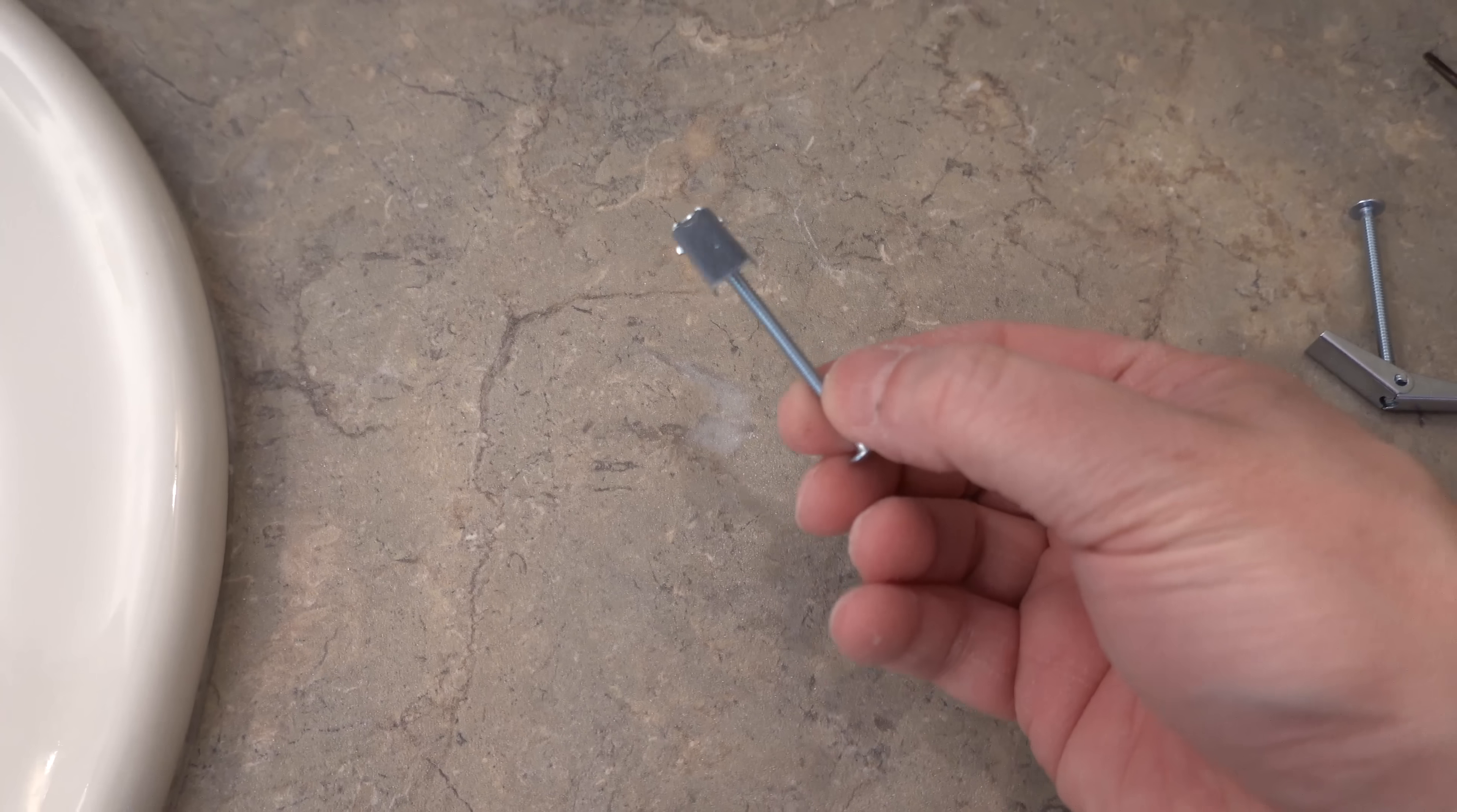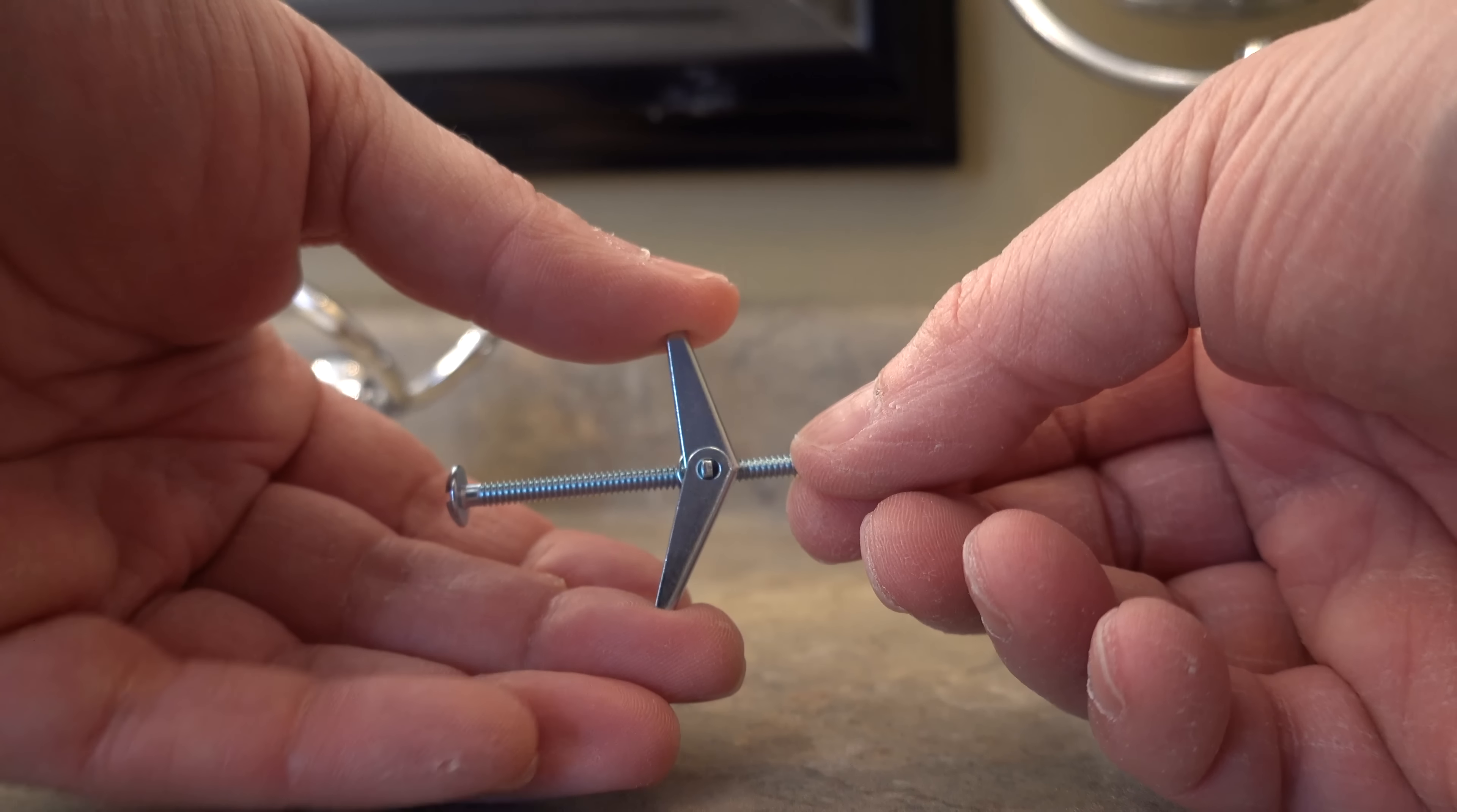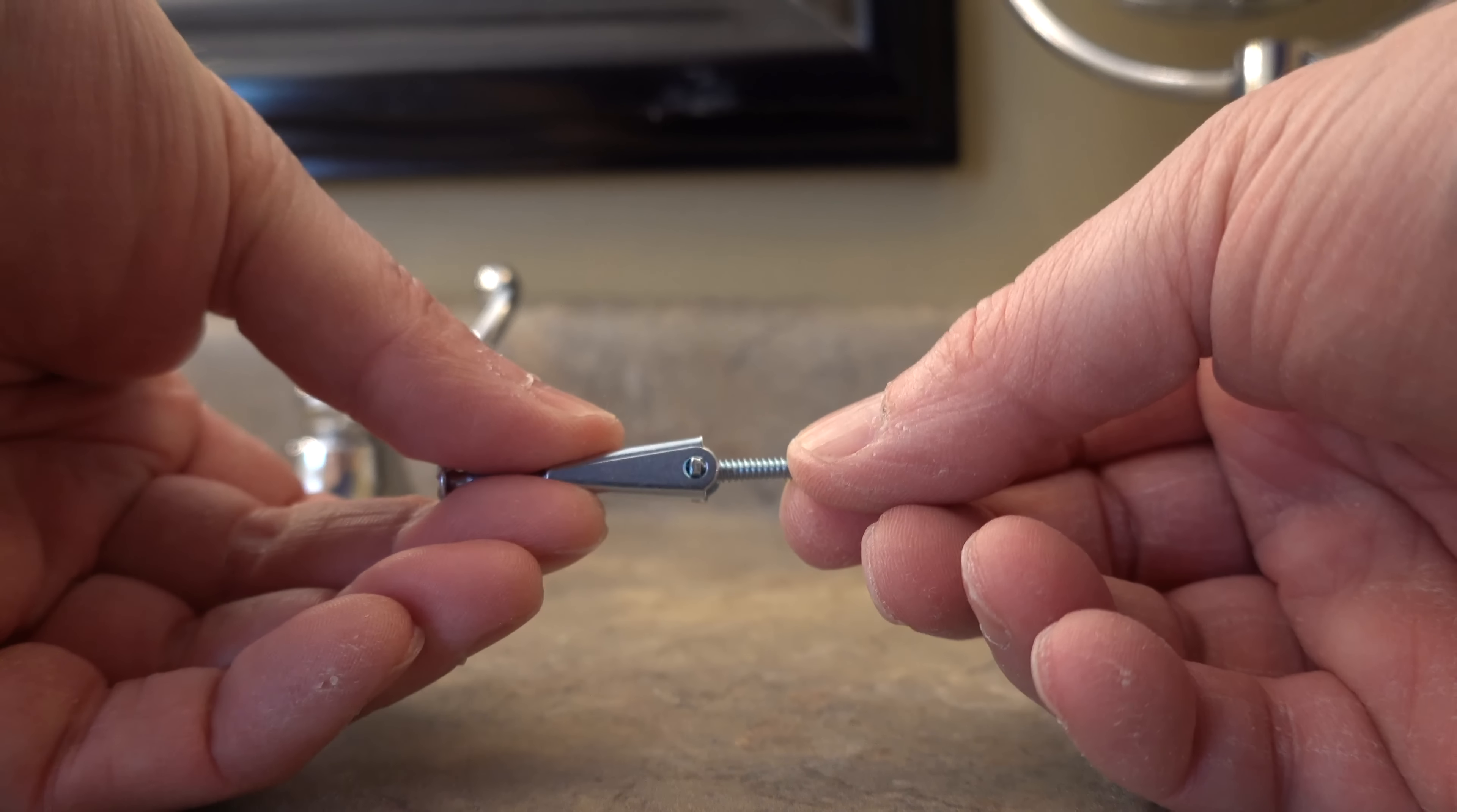But now we're going to upgrade our wall anchor to one of these. This is called a toggle bolt. Once you put one of these in you're likely to never have a problem again.